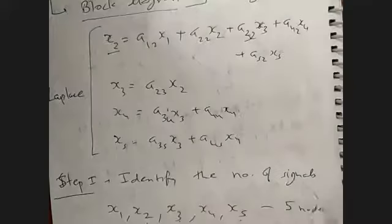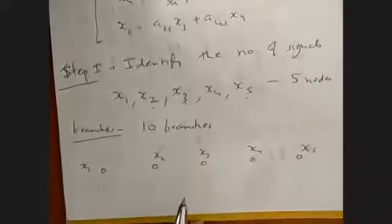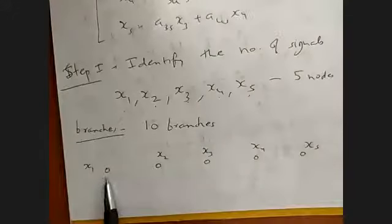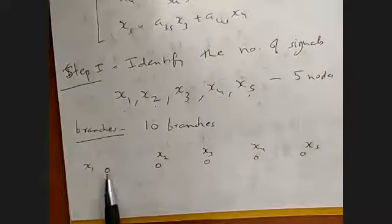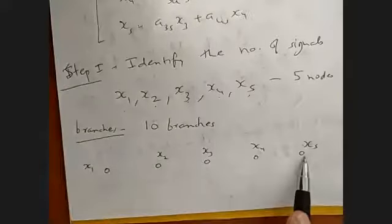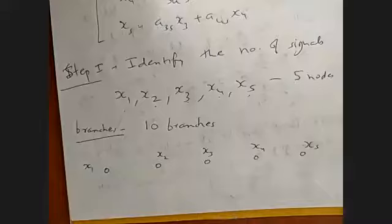Counting all the terms, we have 10 branches in this system. For drawing the signal flow graph, we first write the nodes x1, x2, x3, x4, and x5. These will be your nodes. Now we will be writing the equations for each node.